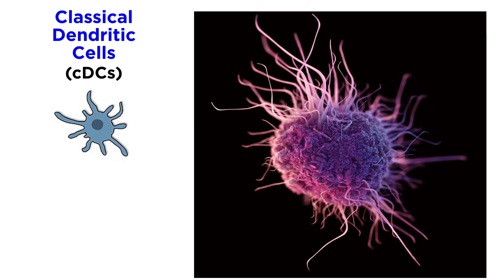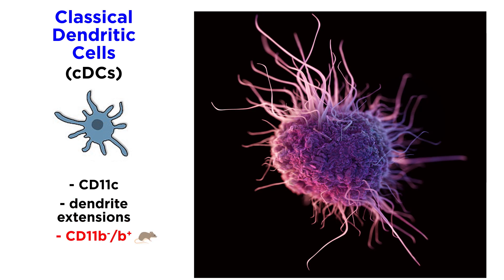CDCs, also called classical dendritic cells or myeloid dendritic cells, are characterized by the expression of high levels of CD11C and display a characteristic morphology of long dendrite extensions. There are two primary CDC subpopulations in mice: CD11B- and CD11B+. In humans, CDCs express not only CD11B and CD11C, but various other differentiating markers such as CD1A and CD14, to name a couple.